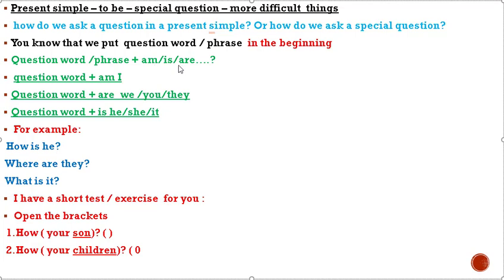Question word plus 'am' — when we have subject 'I', we use 'am'. Question word plus 'are' — when we have subject 'we', we use 'are'. Question word plus 'is' — when we have subject 'he', 'she', or 'it', we use 'is'. For example: 'How is he?', 'Where are they?', 'What is it?' — question words 'how', 'where', and 'what'.